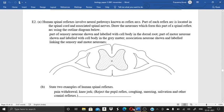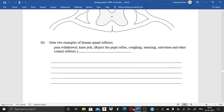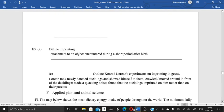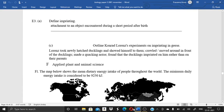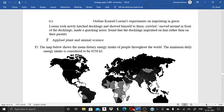Next question is, human spinal reflexes involve neural pathways known as reflex arcs. Part of each reflex arc is located in the spinal cord and associated spinal nerve. Draw the neurons which form this part of spinal reflex arc using the outline diagram below. So you have to draw the diagram over here. Next question is, state two examples of human spinal reflexes. Next question, define imprinting. Outline Conrad Lorenz's experiment on imprinting in geese.